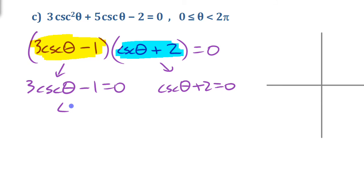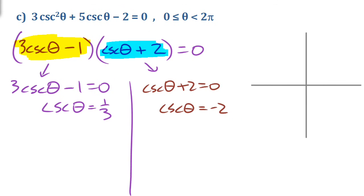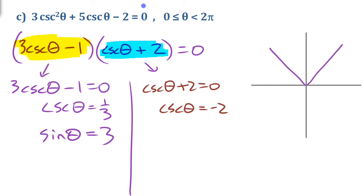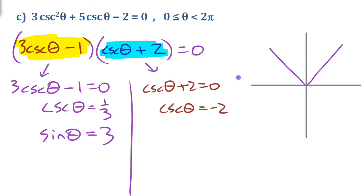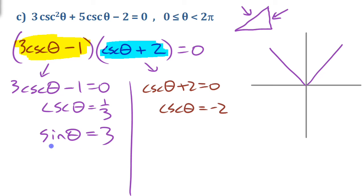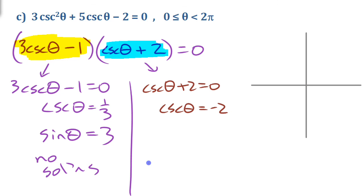Isolating each case: cosecant theta equals 1 third, or cosecant theta equals negative 2. Cosecant being 1 third is the same as sine theta being 3. But there's no way to have a sine ratio of 3 — in a triangle, sine is opposite over hypotenuse and the opposite can't be bigger than the hypotenuse. On a unit circle, the y-coordinate can't be 3. So this factor gives us no solutions.